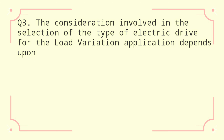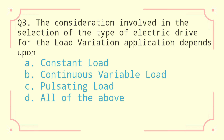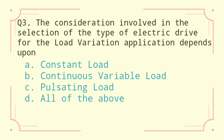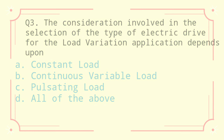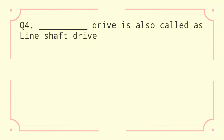Question 3: The consideration involved in the selection of the type of electric drive for load variation application depends upon: a) constant load, b) continuous variable load, c) pulsating load, d) all of the above. The correct answer is all of the above.